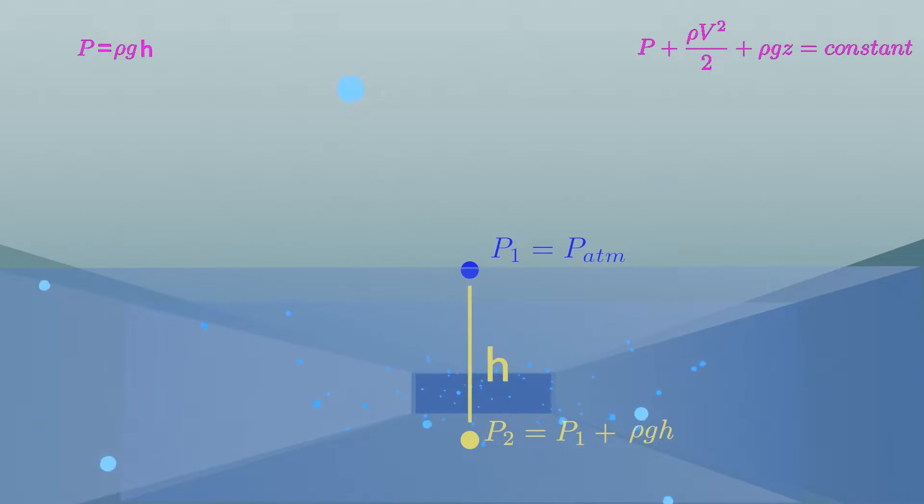But if the fluid is accelerating, then you cannot apply this formula. Static pressure will be different in this case. So, static pressure is equal to hydrostatic pressure in open channel flow if the fluid is ideal and is moving with constant velocity.